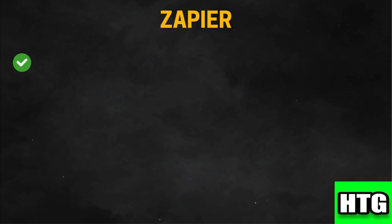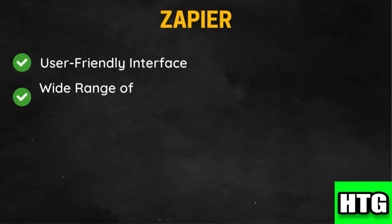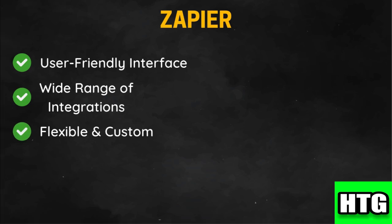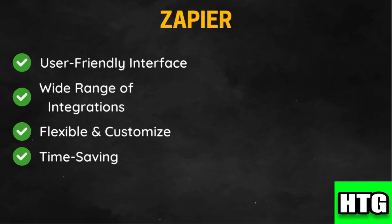Now let's look at Zapier. Zapier is easy to set up and use, with a drag-and-drop interface for creating automated workflows called ZAPs. It supports a vast number of integrations, making it highly versatile for various business needs. Users can create complex workflows and multi-step ZAPs to automate intricate business processes, freeing up time for more strategic activities. It is suitable for businesses of all sizes, from small startups to large enterprises.